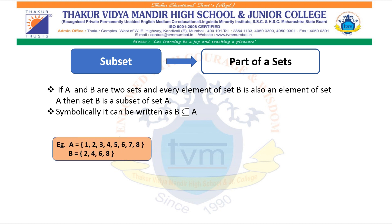Let us see one example. A is a set of {1, 2, 3, 4, 5, 6, 7, 8} and B is a set of {2, 4, 6, 8}. Observe the elements of set B — 2, 4, 6, 8 are also included in set A. Therefore, set B is a part of set A. It means set B is a subset of set A. Every element of set B is also an element of set A. Therefore, B is a subset of set A.